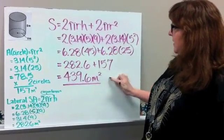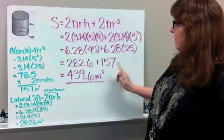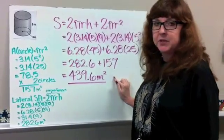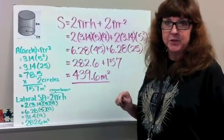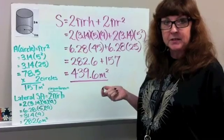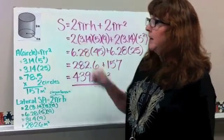And you work it out, and you get down to 439.6 meters squared. You can also do the net and just do the two circles and find the area of the two circles, find the circumference of a circle, and then you can figure out your rectangle.